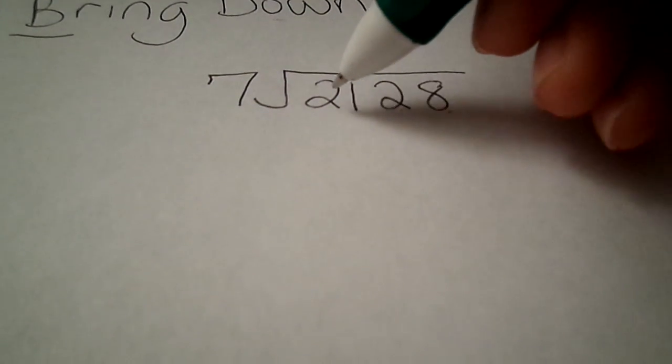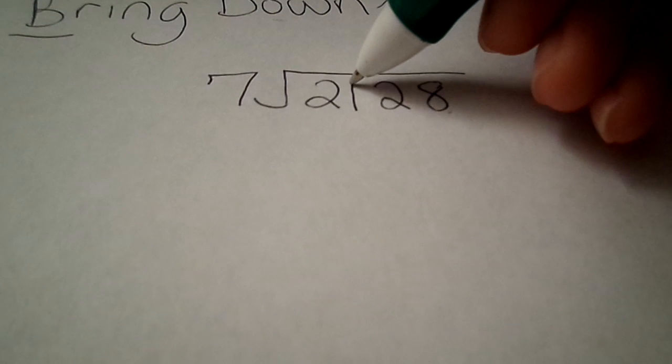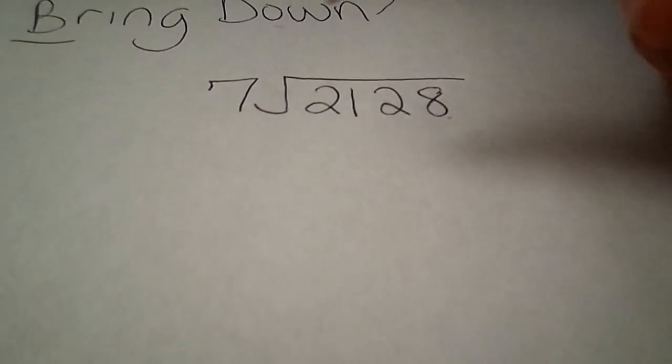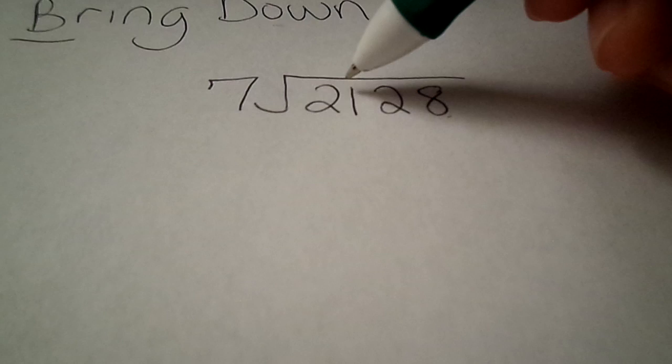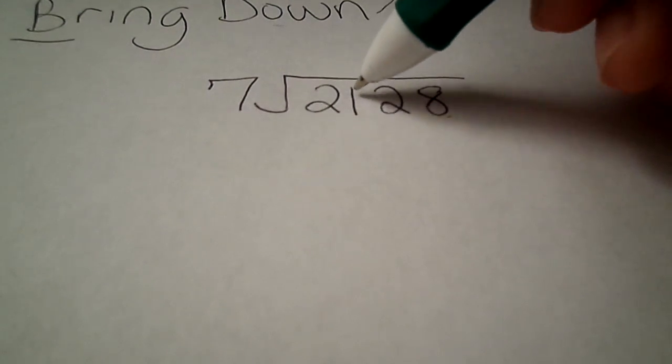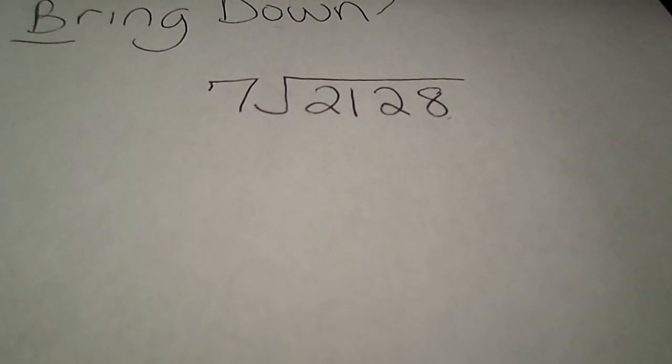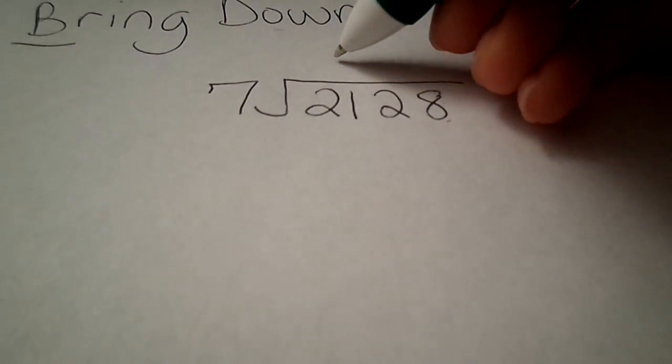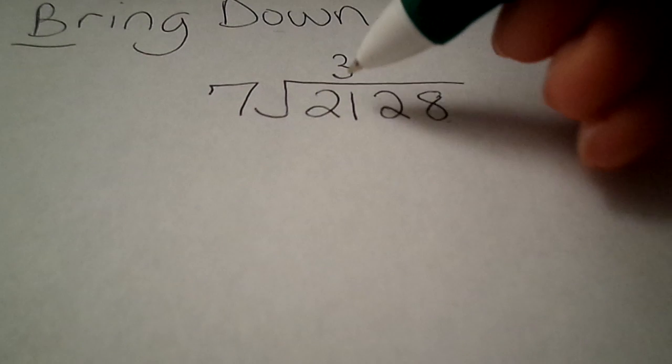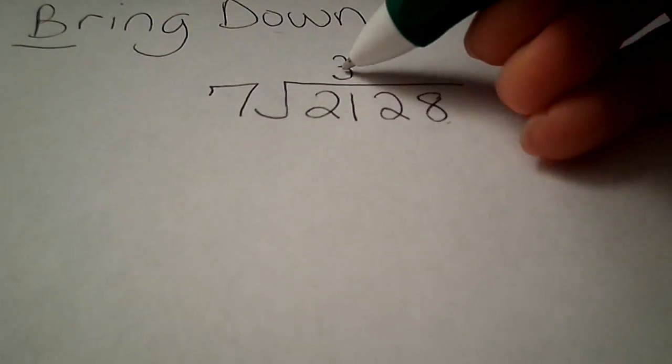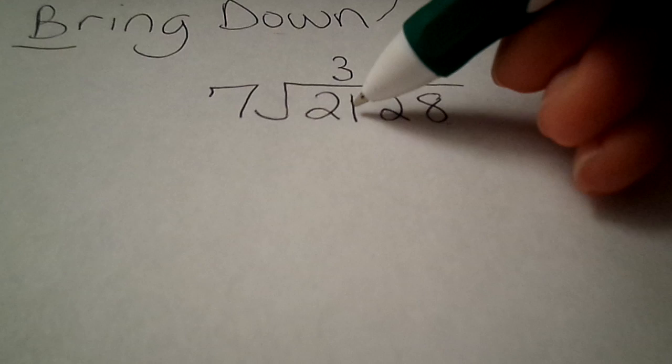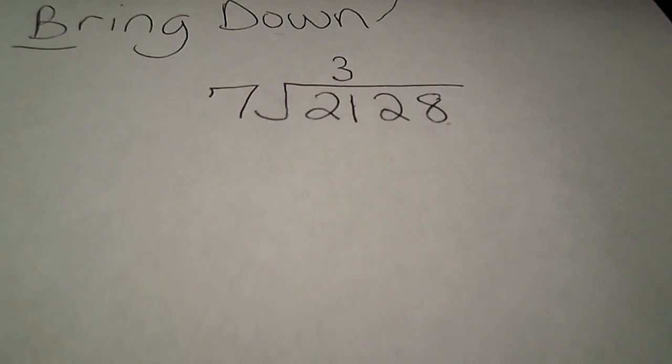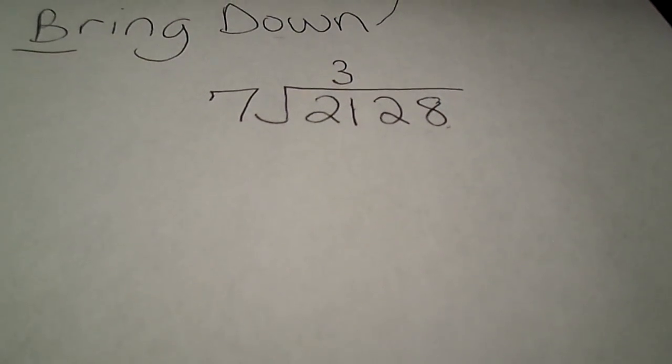So we use both numbers to see if 7 can go into that. So can 7 go into 21? Yes. How many times? 21 divided by 7 is 3. Notice I put the 3 above the 1. That's important as far as placement goes. And it'll also help prevent countless errors. So I just completed step 1. Divide.